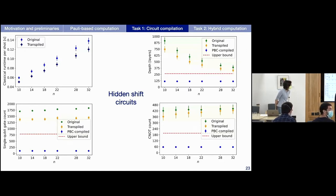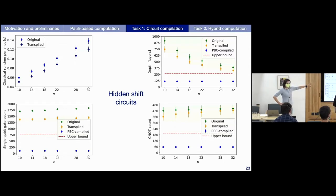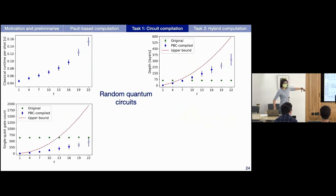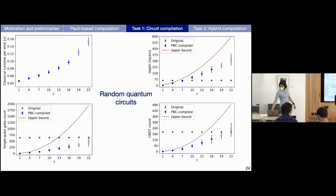Question: What does the dashed red line mean? Response: We derived upper bounds for depth and gate counts in our paper — these are the worst-case depths, assuming all your Paulis are non-trivial with no identity terms. These are very gross overestimates, as you can see clearly in the graphics. The line is horizontal in the hidden shift plots because T-count is constant at 14, while in the random circuit plots it grows as T², giving the parabola.